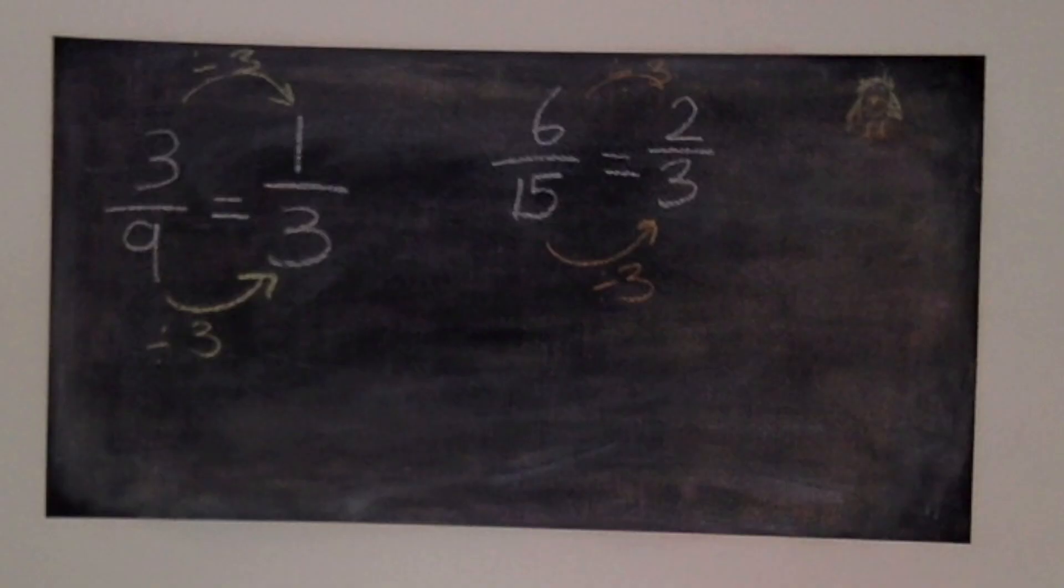So the first challenge came from Ringo yesterday who said that you could only simplify fractions with even numbers by halving and halving them again. But as you can see here this is not true because in an example such as 3/9ths we can divide both the numerator and the denominator by 3 to give us the simplified answer of 1/3rd and there's lots more examples of how these can be done.